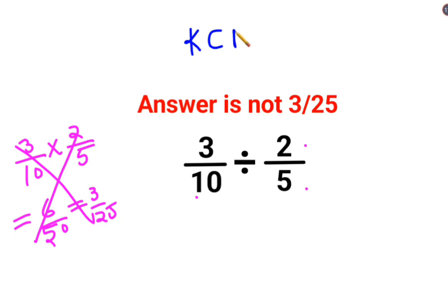Where K stands for keeping the first number as it is, C stands for changing the division sign to multiplication, F stands for flipping or taking reciprocal of 2 upon 5, which is 5 by 2.